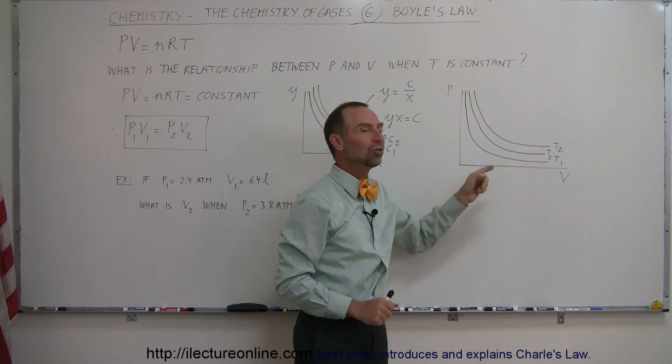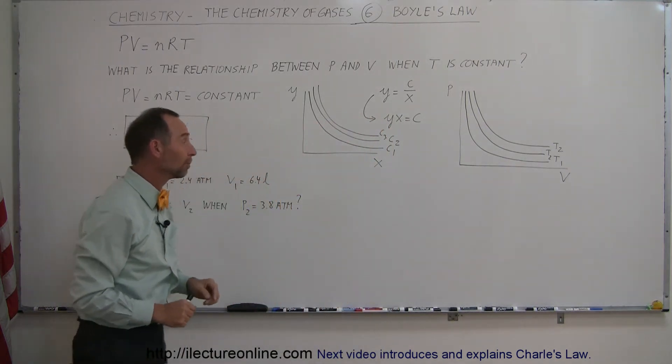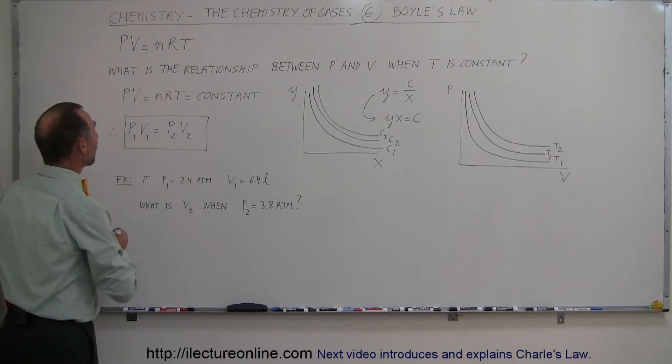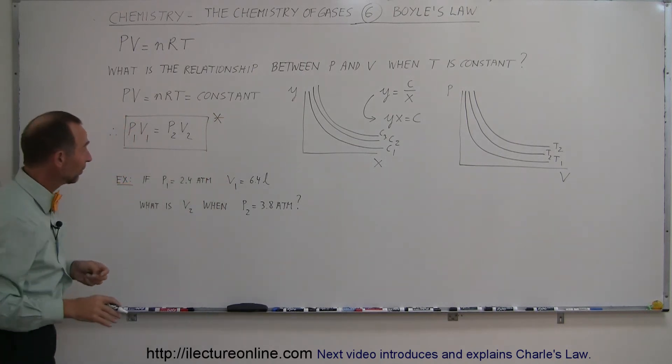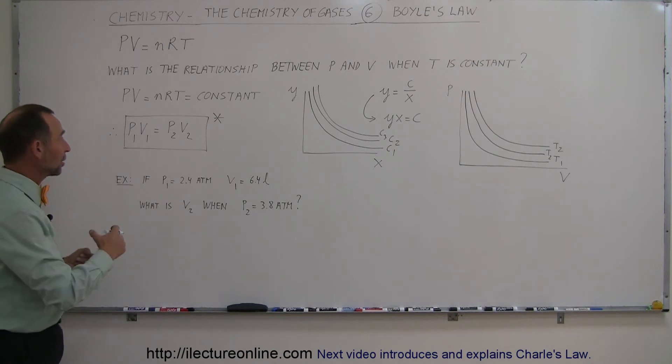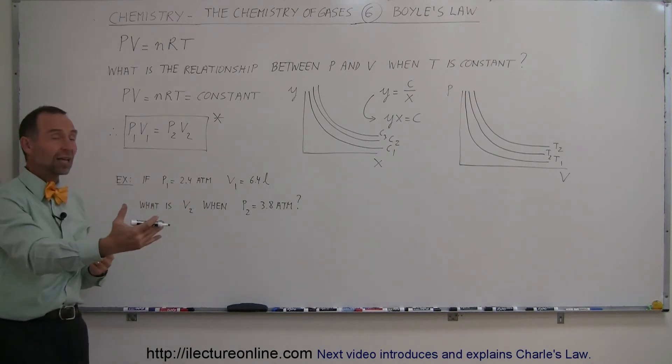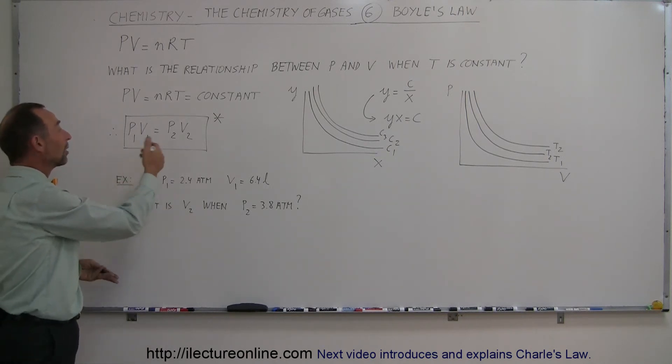But again, the general relation between pressure and volume does not change. The result of that is we end up with this relationship between pressure and volume, which allows us to find the pressure or the volume in the second state, in the final state, when we know the initial state and one of the two variables.